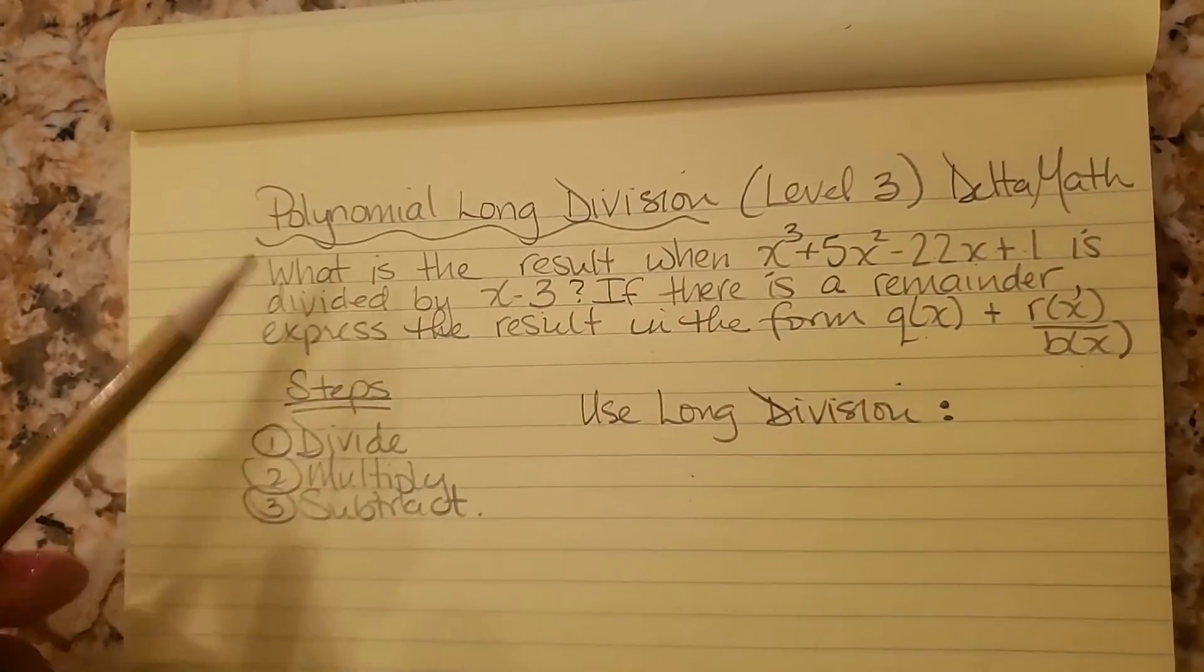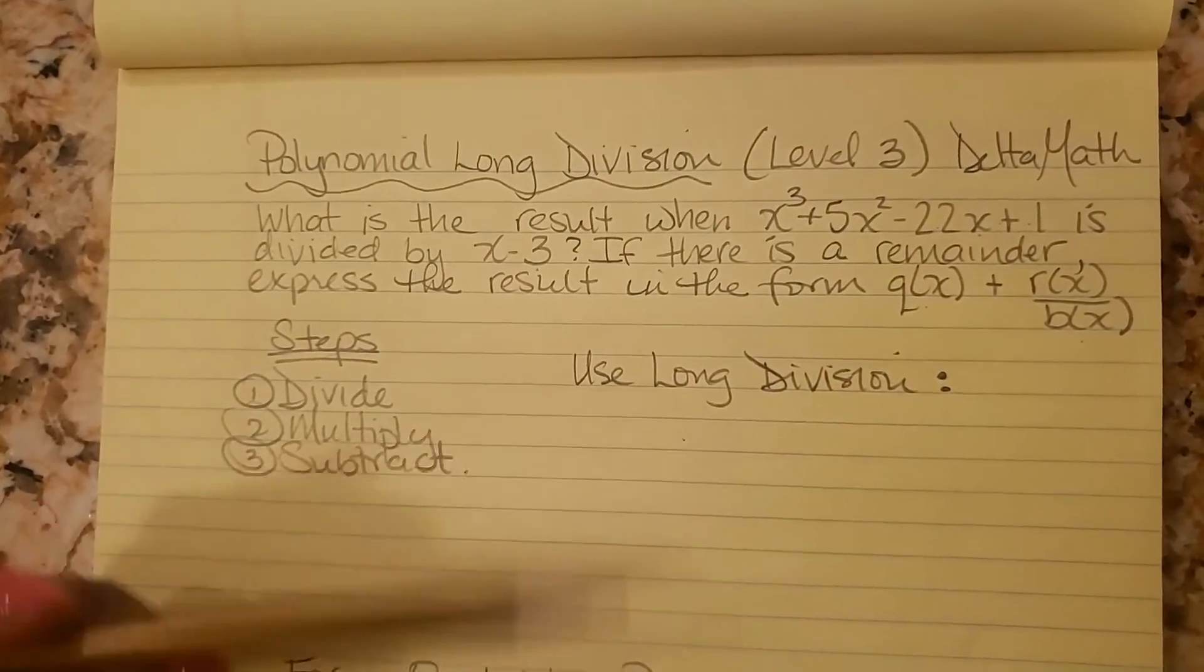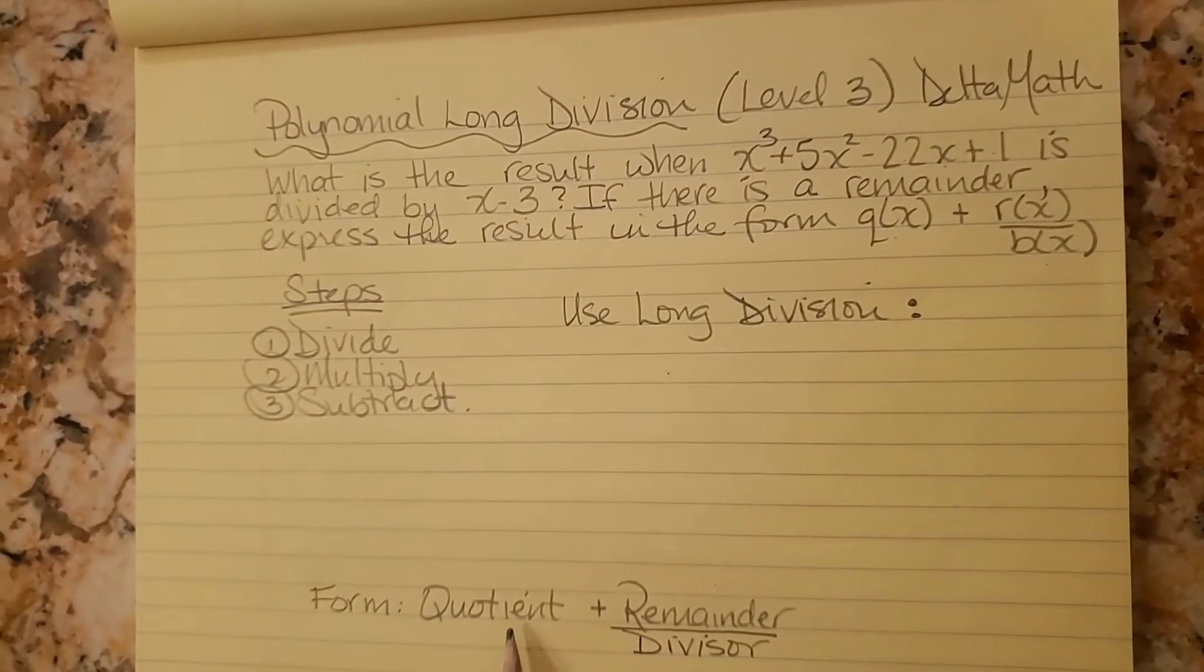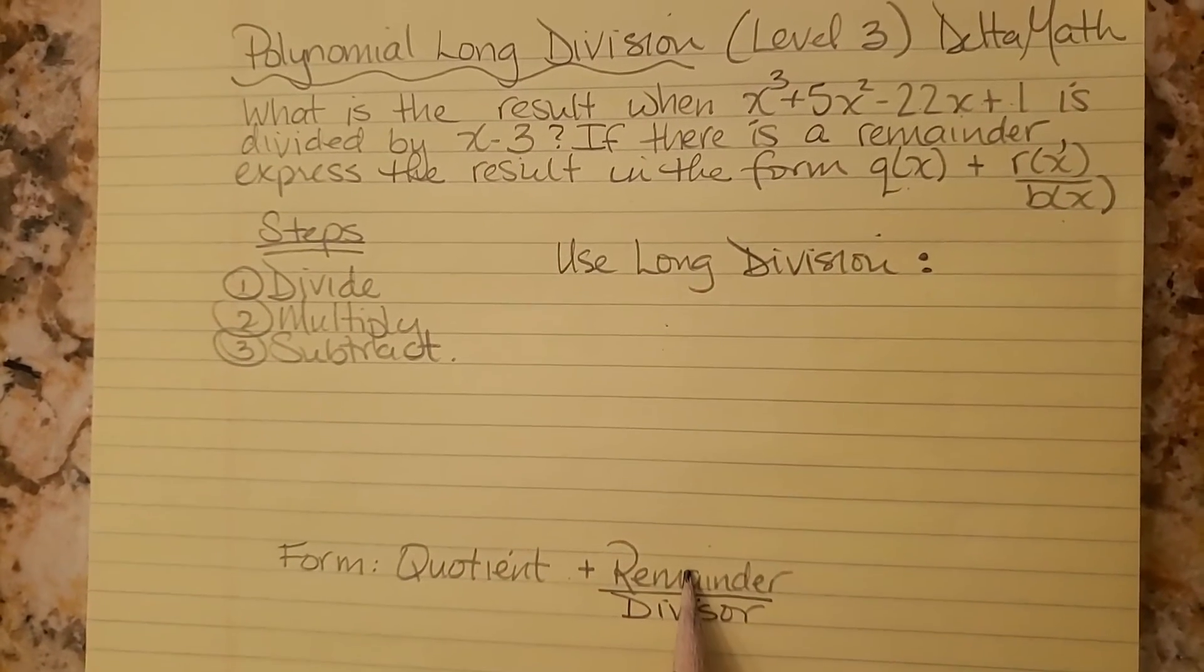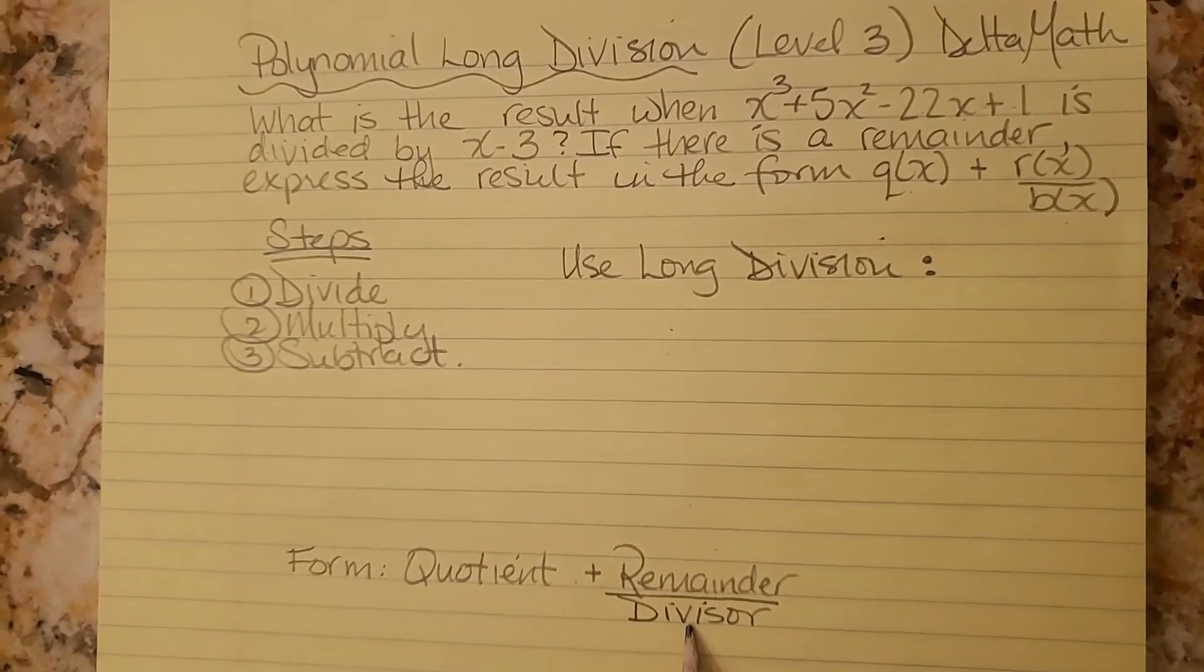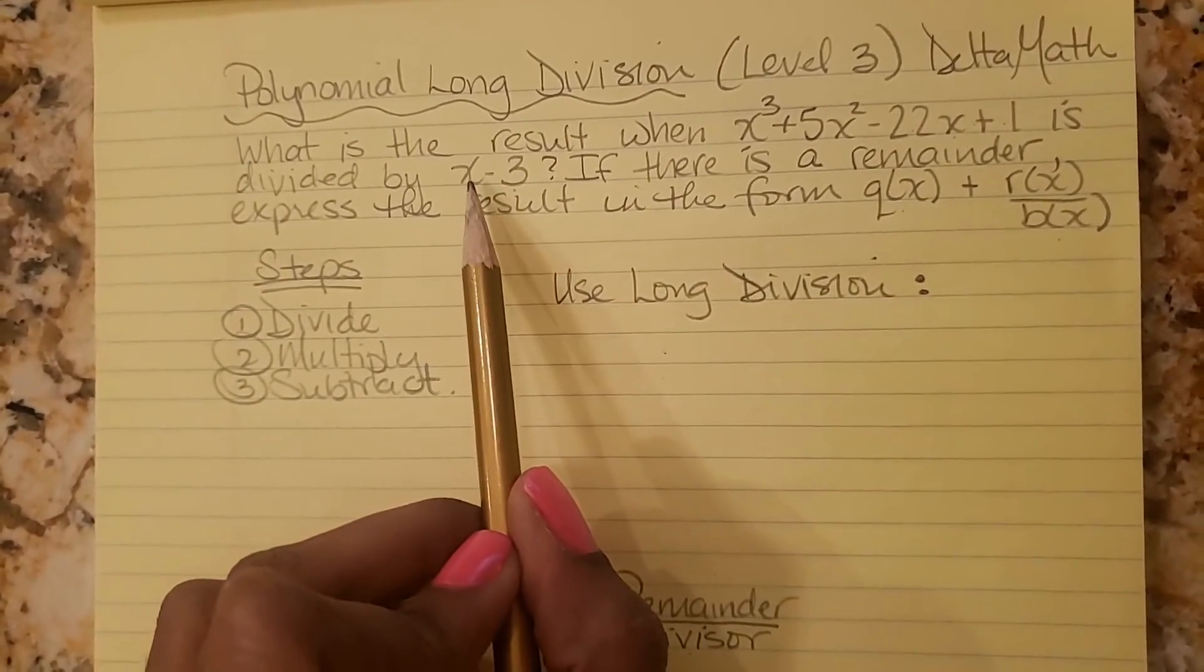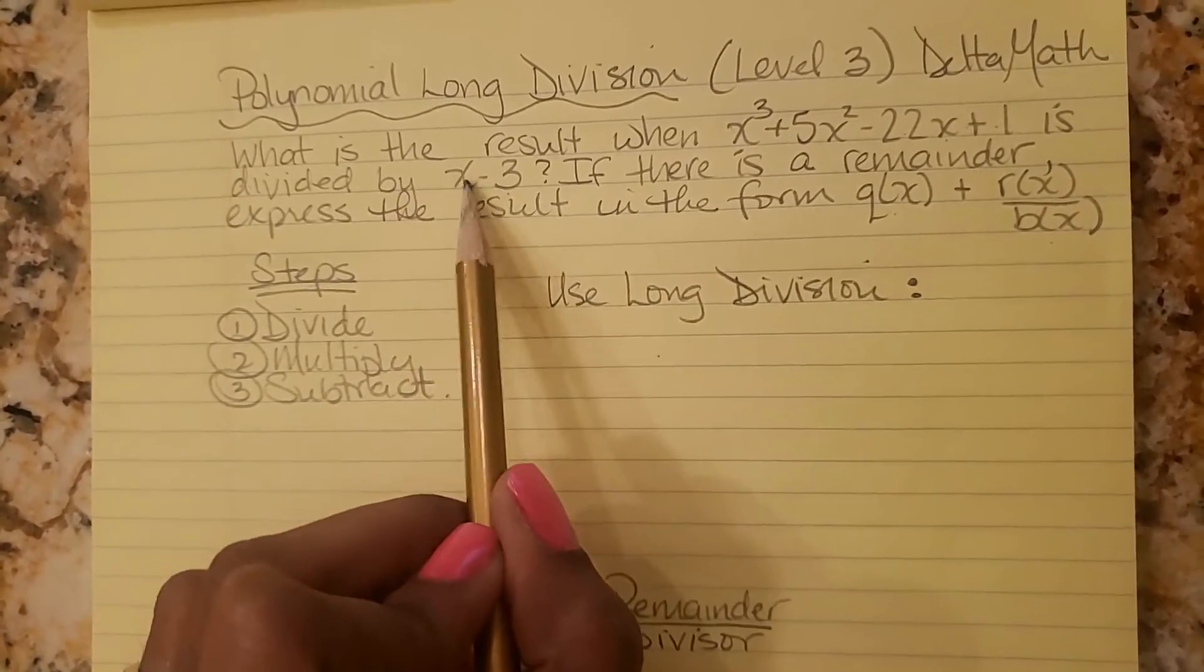So there's going to be a remainder. I purposely chose this one so that you can see how to set up your answer when you have a remainder, and it's pretty much the quotient plus the remainder divided by the divisor. Divisor is just what we're dividing by, so the x minus 3.